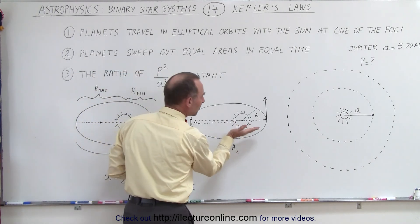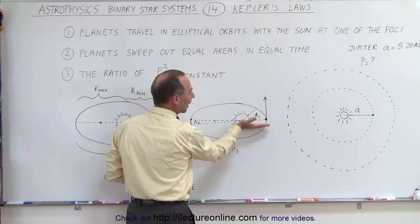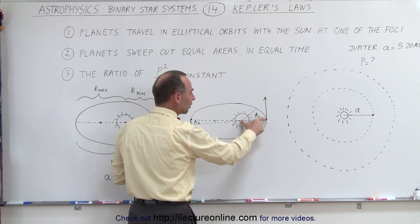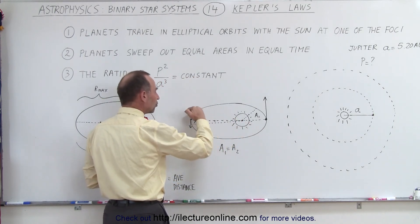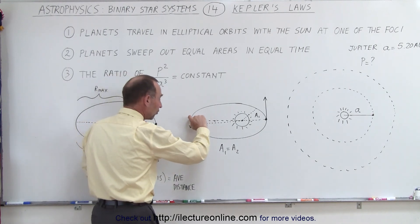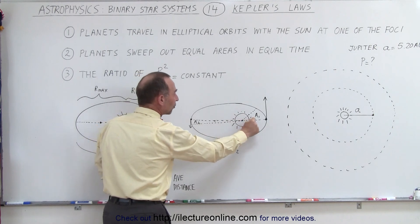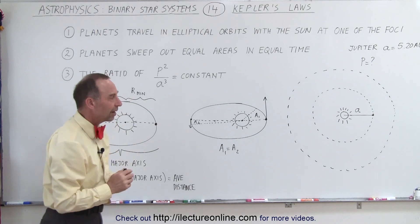But what this really means is if you have an imaginary line between the planet and the Sun, and we allow the planet to move forward in its orbit for a certain fixed amount of time, that planet will then sweep a certain amount of area. Let's call that A1. Then when the planet is farther away from the Sun, it will travel slower. But in the same time period, even though it doesn't travel as far, the area swept up will be exactly the same as it was over here. So the areas will always be equal in the same amount of time.